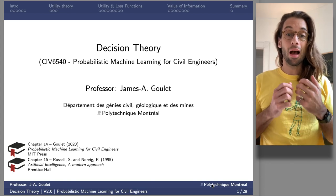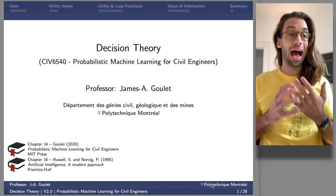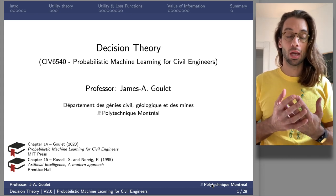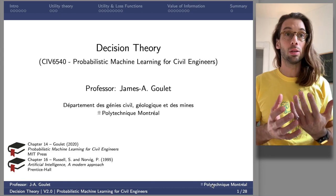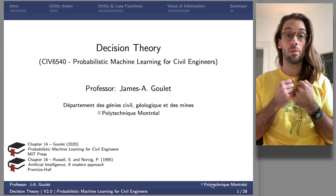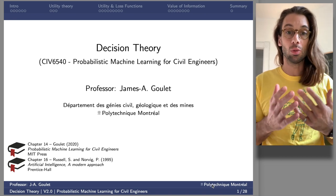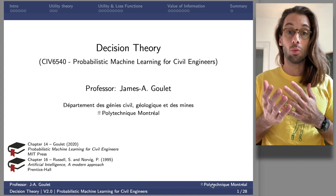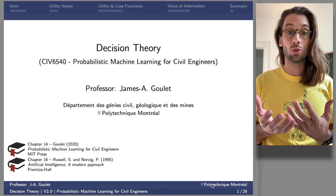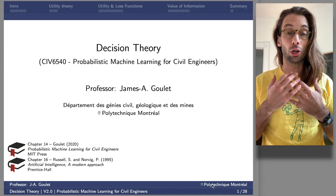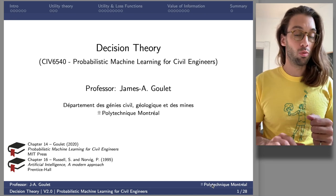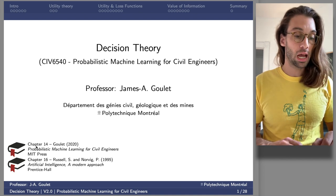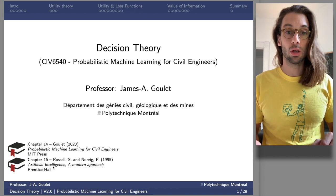Today we're going to look at decision theory — how can we put a mathematical model on how people or organizations make decisions. We want to go one step further from where we've been so far. We've used machine learning to create models and extract relationships from data; now we want to use these models to model human or organizational reasoning in order to take decisions. The references for today are chapter 14 and chapter 16 in Russell and Norvig's Artificial Intelligence: A Modern Approach.